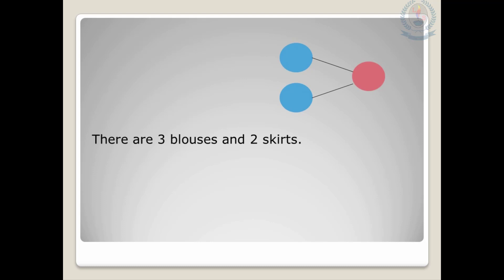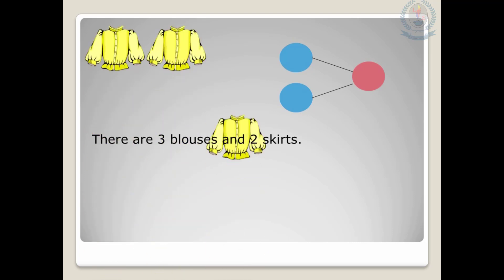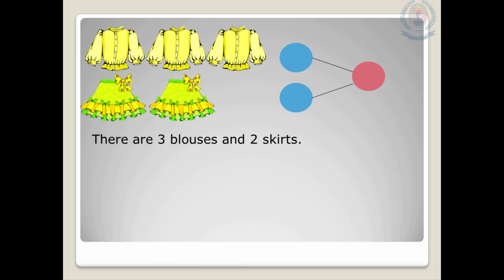Look at this. Can you read this? There are three blouses and two skirts. How many blouses are there? Yes, there are three blouses. And how many skirts are there? Yes, there are two skirts. Now can you tell me how many clothes are there all together? Very good — there are five clothes all together.